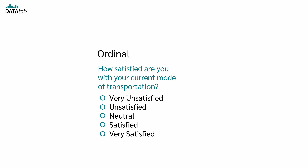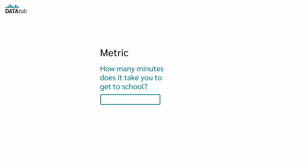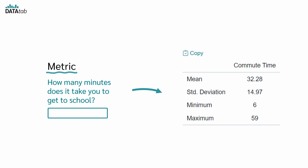Further, you can ask: how satisfied are you with your current mode of transportation? Choices might include very unsatisfied, unsatisfied, neutral, satisfied, very satisfied. This is an ordinal variable. You can rank the responses to see which mode of transportation ranks higher in satisfaction, but the exact difference between satisfied and very satisfied isn't quantifiable. The last question: how many minutes does it take you to get to school? Minutes to get to school is a metric variable – you can calculate the average time and use all standard statistical measures.